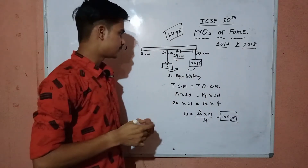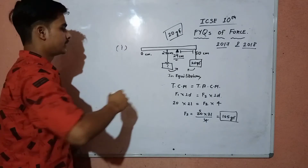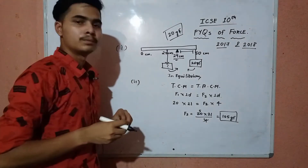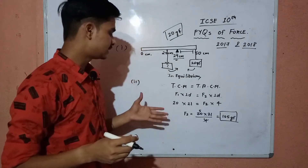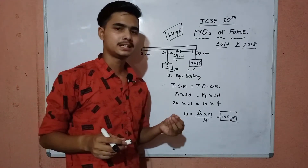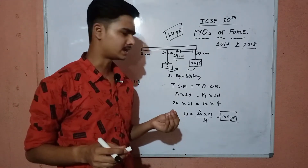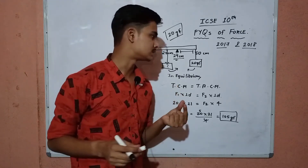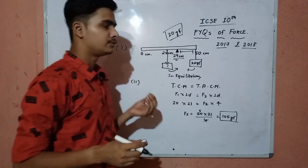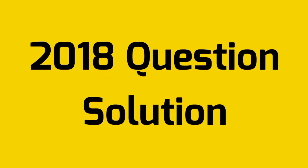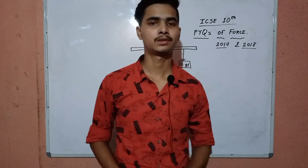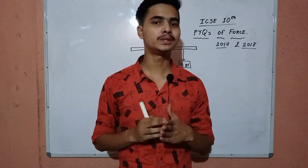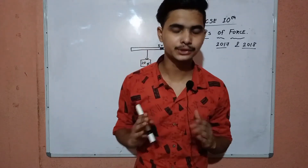This is the required solution for finding the weight of the meter rule — 105 gram force. I hope each of you understood; it's an easy question if you know the basic concept. Kindly note it down if needed. Now let's look at the second question, which is the 2018 question.